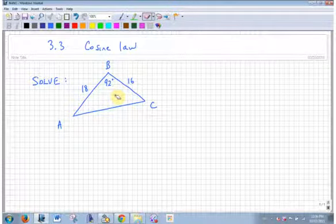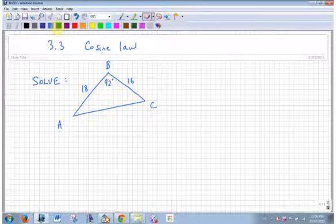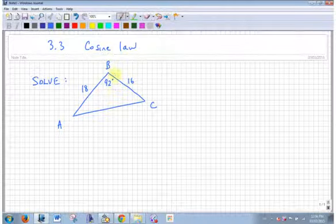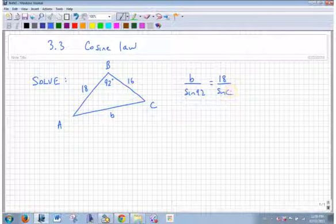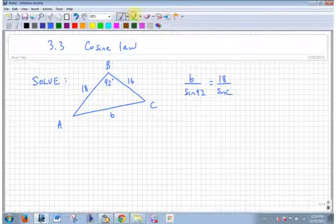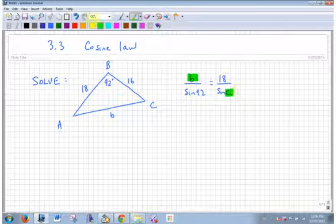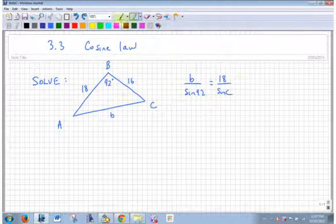So sine law then. I would go little b over sine 92 equals little c, 18, over sine C. Can I solve that? Why not? I don't have three, I got two unknowns in one equation, can't do it.